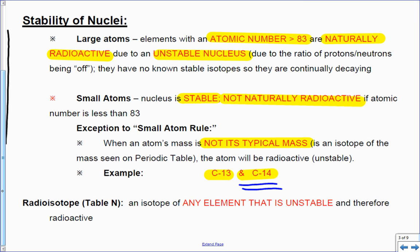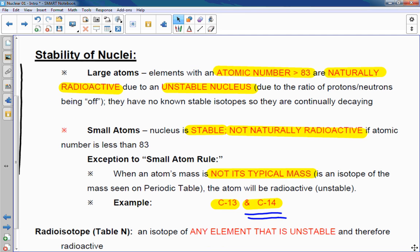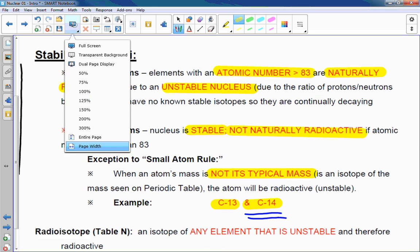Radioisotope is an isotope of any element that is unstable and therefore radioactive.